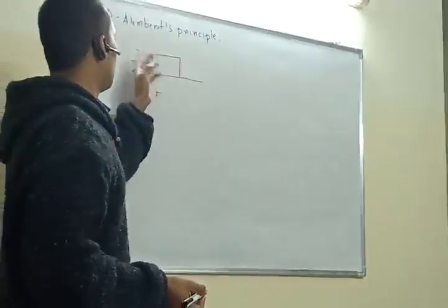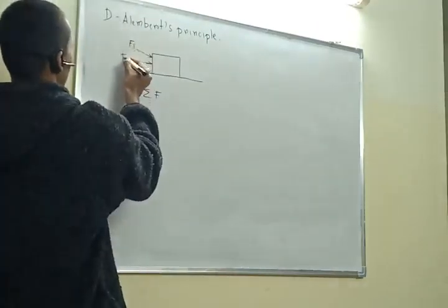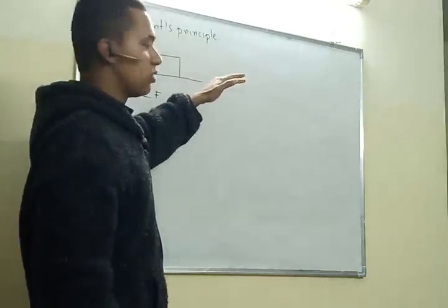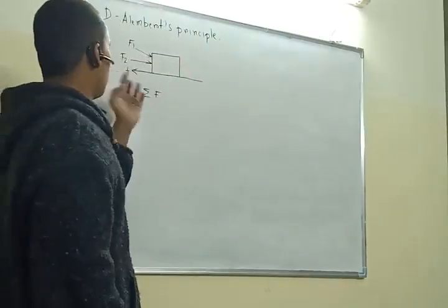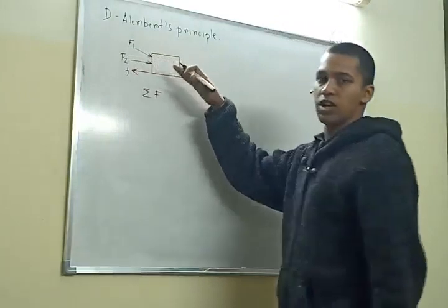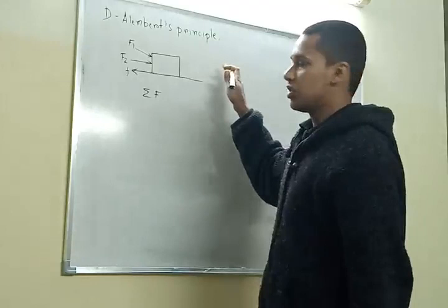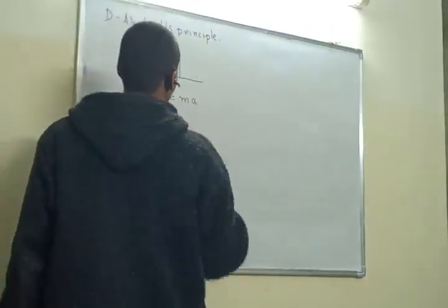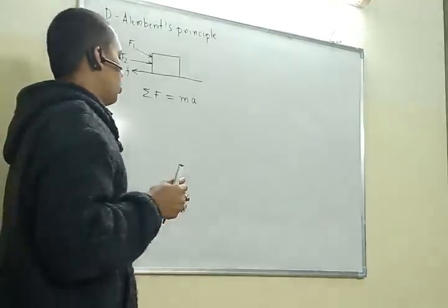Because of the forces F1, F2, and F acting on the body: F1 is acting in one direction and its component acts accordingly. Suppose the summation of F1 and F2 is greater than F — then there will be a net force acting on the body in that direction. Because of that force, this body will start to move. That is equal to mass times acceleration of the body. Up to this, in Newton's law, we have seen that net force acting on the body equals mass times acceleration.